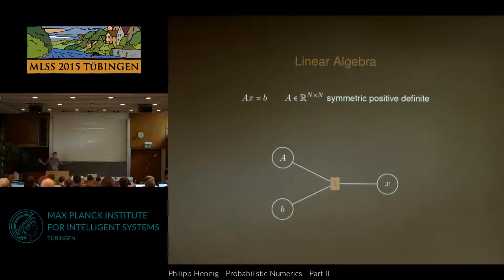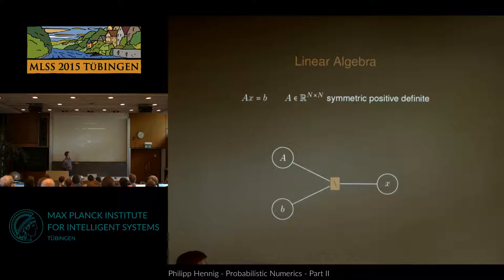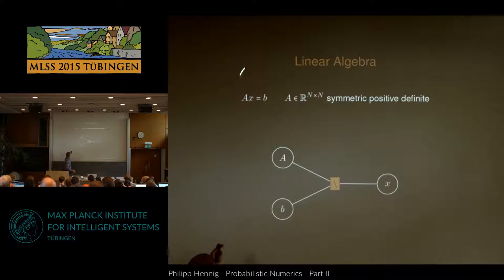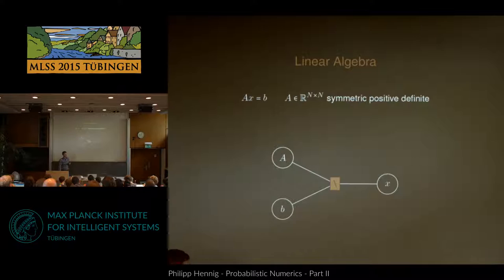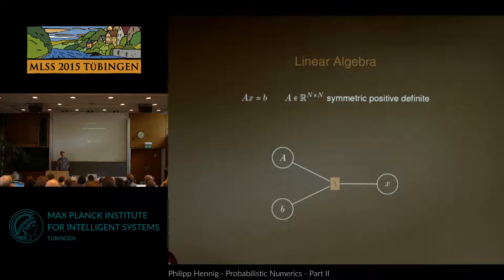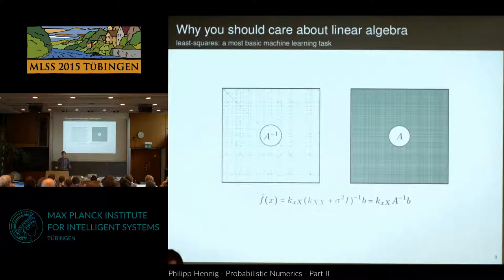Linear algebra is a really large field, and you all learned a lot about it probably in the very first year of your undergraduate course. I will focus on one particular kind of problem: finding a vector x of length n such that a matrix A times x equals a vector B of the same size. The matrix A has to be square, of size n by n. To make things simple, I'll assume A is symmetric positive definite. One reason is that then there is a unique inverse to A. This also forms one of the most basic machine learning tasks: least squares regression, kernel ridge regression, Gaussian process regression, or linear SVMs.